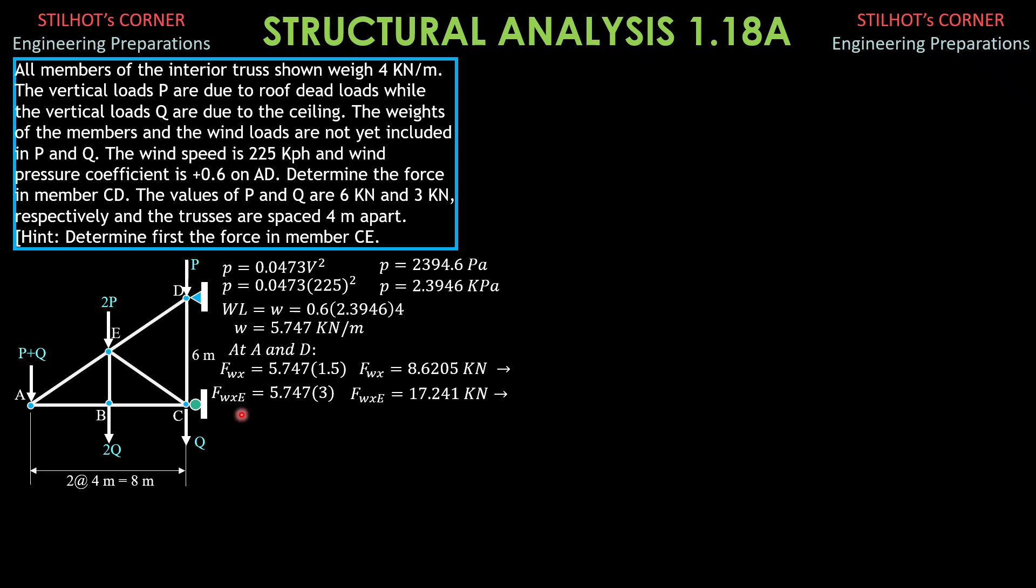So for the Y component of the wind load, which is downward because it is a positive pressure, it is equal to 5.747 times the horizontal projection, which is 4 meters, 2 meters to the left and 2 meters to the right for BC. So that makes it 4.